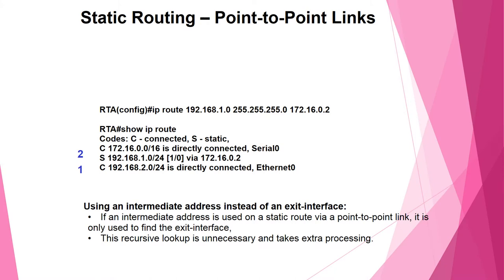Using config with 'ip route 192.168.1.0' and an intermediate address such as 192.16.0.2, then running 'show ip route' demonstrates using an intermediate address instead of an exit interface. If an intermediate address is used on a static route through a point-to-point link, it is only used to find the exit interface. This recursive lookup is unnecessary and takes extra processing.